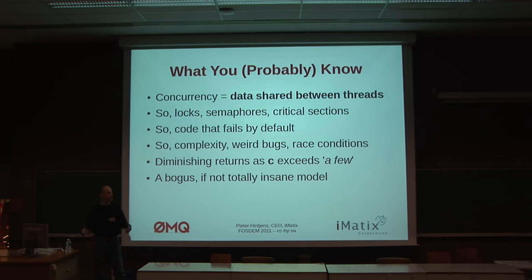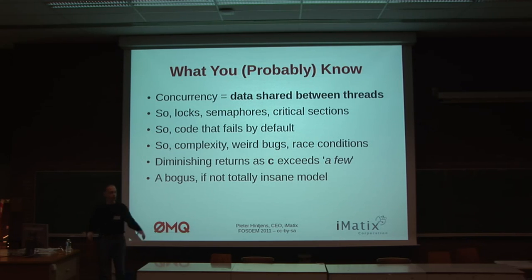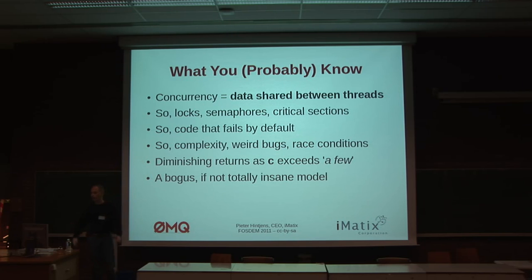We're not really used to thinking of concurrency as multiple boxes or multiple processes. Modern browsers now start to have a process per tab rather than a thread per tab — this is a new way of thinking. So we have these threads that try to share data and they try to prevent conflicts using locks and semaphores. And this code basically fails by default. When you share data, it seems to work, but as you scale, it fails. You're building systems that are not fail-safe — they are going to fail by default. The more you load your system, the more it fails. The more you make it parallel, the more it fails. This is really terrible. Your diminishing returns hits at about four or eight threads.